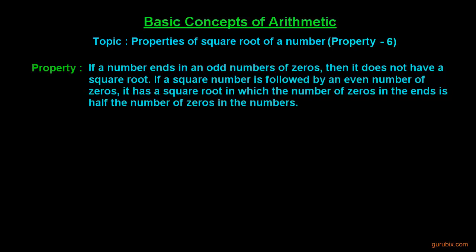The property is as follows: if a number ends in an odd number of zeros, then it does not have a square root. If a square number is followed by an even number of zeros, it has a square root in which the number of zeros in the end is half the number of zeros in that number.